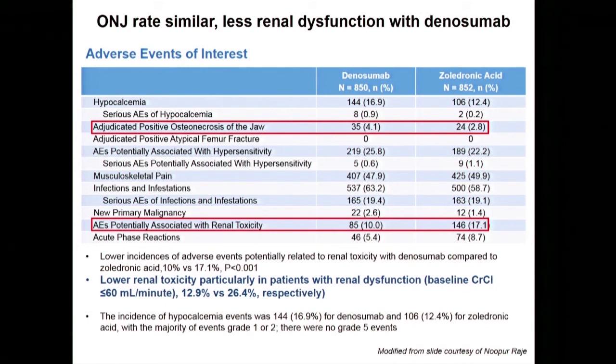In the future, denosumab might play a key role for patients who have underlying kidney problems, since the nice thing about this drug is that you don't have to modify or hold the dose if you have any form of kidney dysfunction, and it doesn't lead to kidney dysfunction. There is an ongoing trial led by my colleague Dr. O'Donnell specifically looking at patients who have much more severe kidney dysfunction or who are on dialysis, since many bisphosphonate trials have excluded such patients.